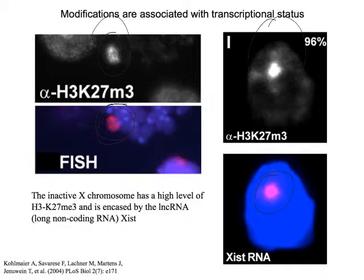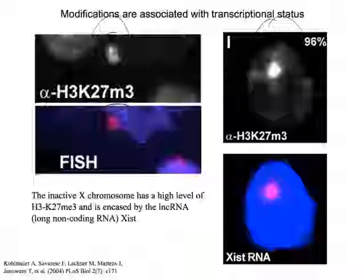Methylation isn't always repressive — some other methylation of histones are associated with transcriptionally active regions. The same thing is shown over here on the right: the inactive X is also associated with this long non-coding RNA called Xist. So there are lots of layers that we can put onto a piece of DNA to either make it more or less likely that it's going to be transcribed, including RNAs and histone modifications.